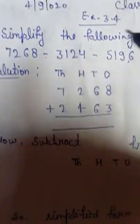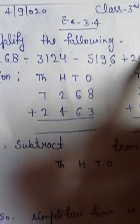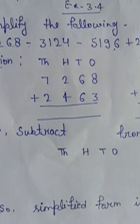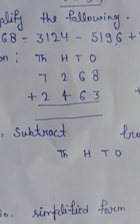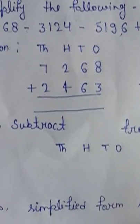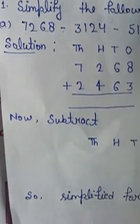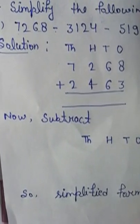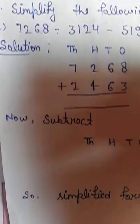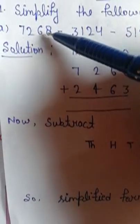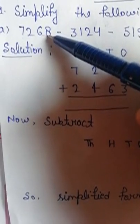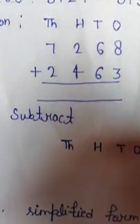तो इन दोनों को एक साथ add करेंगे. ये दोनों numbers plus के हैं, तो इन दोनों को एक साथ add करेंगे — same sign वाले numbers को add करते हैं. First number से start करते हैं: 7268. ये हमारे पास plus का है, तो plus वाले sign के number को देखते हैं — 2463 को add करेंगे इसमें.